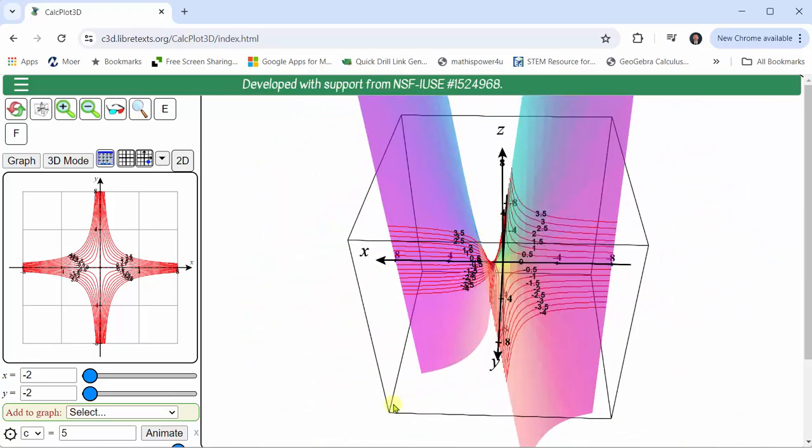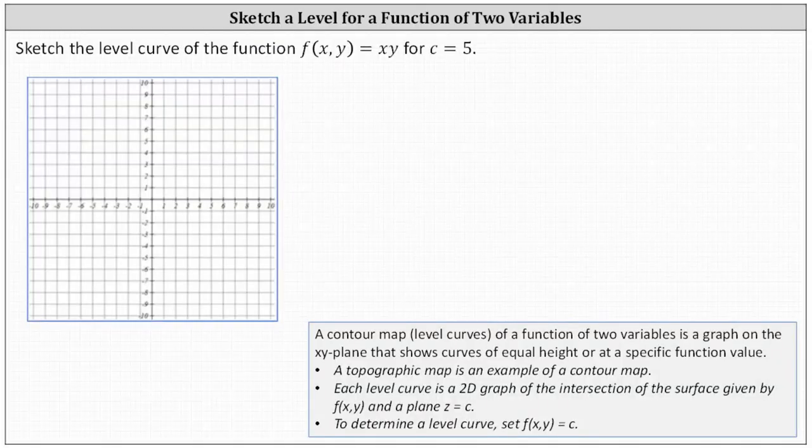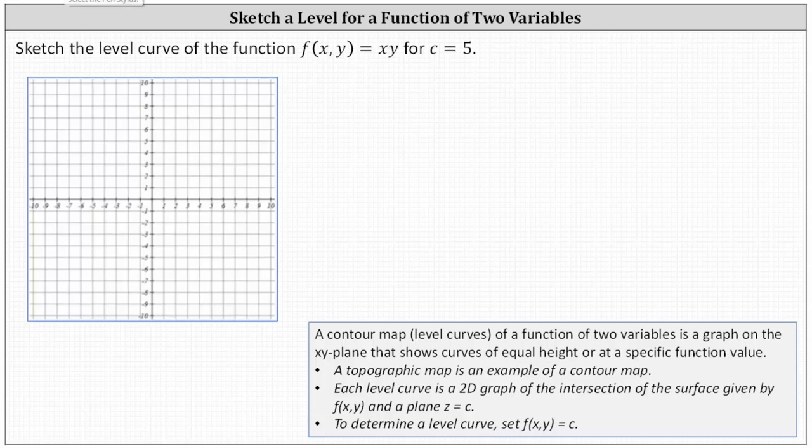And now going back to our question, we're going to find the level curve of the function for c equals 5. To do this, we set f of x comma y equals xy to 5, which gives us the equation xy equals 5, which is a rotated hyperbola.